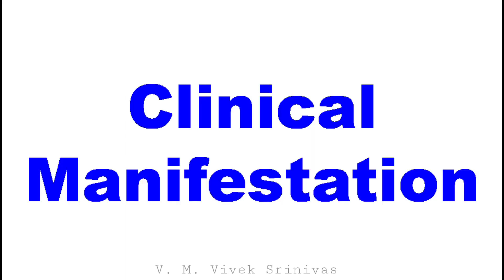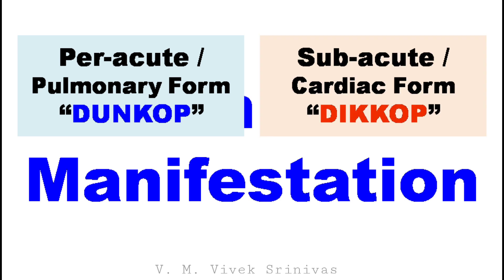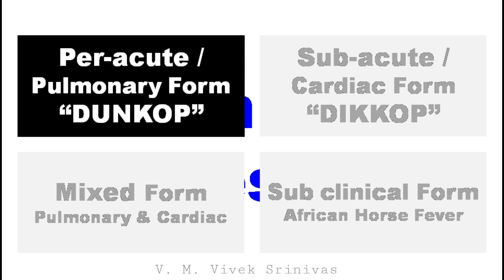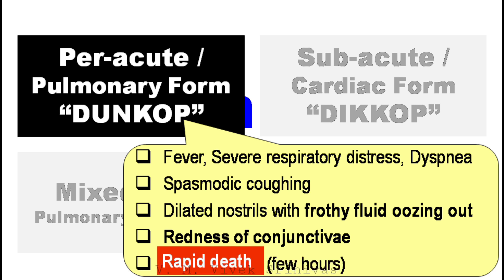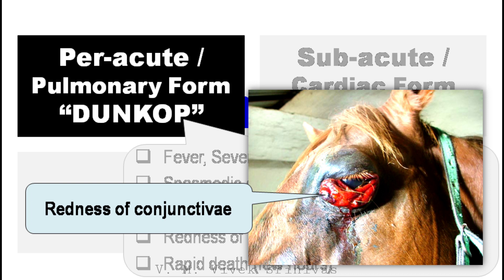Clinical Manifestation. Four forms of this infection are seen: peracute or pulmonary form, also called 'dunkop'; subacute or cardiac form, also called 'dikkop'; mixed form; and subclinical form, also called African horse fever. In the peracute or pulmonary form, fever, severe respiratory distress, dyspnea, spasmodic coughing, dilated nostrils with frothy fluid oozing out, and redness of the conjunctiva, followed by rapid death within a few hours, is noticed. The pictures shown here depict dilated nostrils with frothy fluid oozing out, redness of conjunctiva, and foam from the nares due to pulmonary edema, in horses with this form.